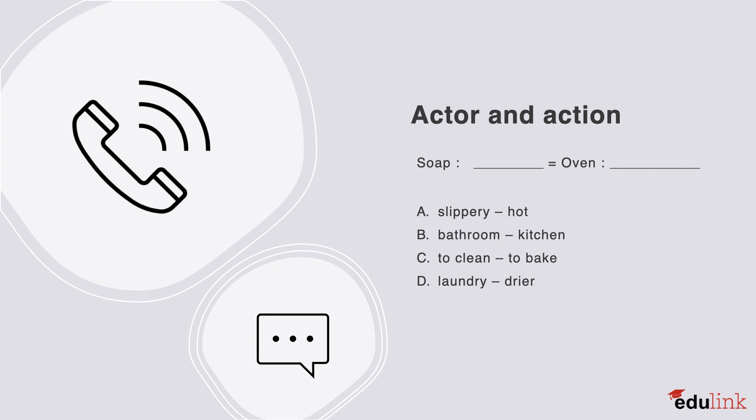The correct answer is C. Soap is an actor that achieves the action of cleaning, and oven is an actor that achieves the action of baking.